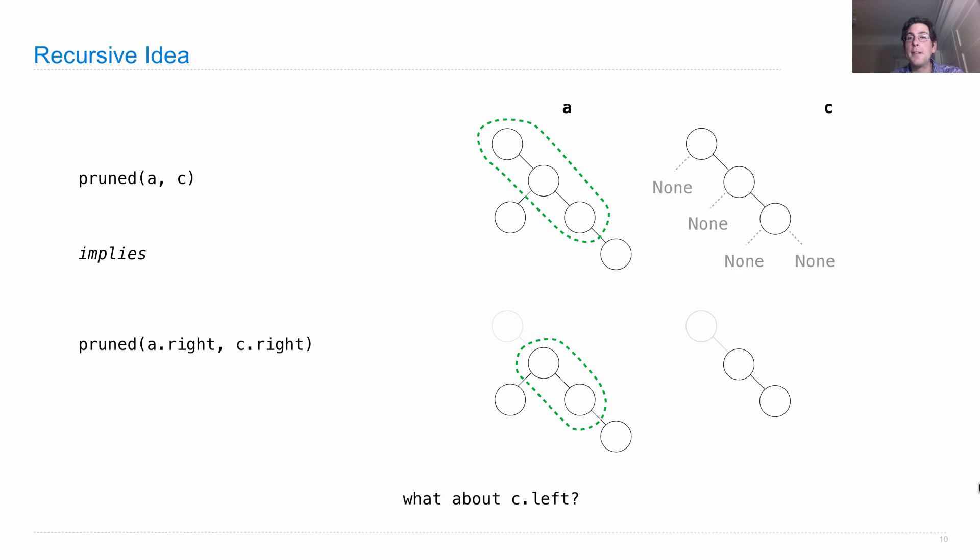So what about C dot left? Well, there is no C dot left. And so if we find that there's nothing there, that's a good indication that we have found a pruned version of anything, because there are no paths in none. So all of those no paths must be contained in whatever T1 is.